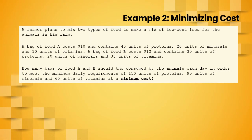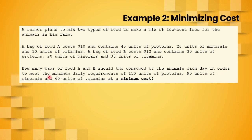For our second example: a farmer plans to mix two types of food to make a mix of low-cost feed for the animals in his farm. A bag of food A costs $10 and contains 40 units of protein, 20 units of minerals, and 10 units of vitamins. A bag of food B costs $12 and contains 30 units of protein, 20 units of minerals, and 30 units of vitamins. How many bags of food A and food B should be consumed by the animals each day in order to meet the minimum daily requirements of 150 units of protein, 90 units of minerals, and 60 units of vitamins at a minimum cost?